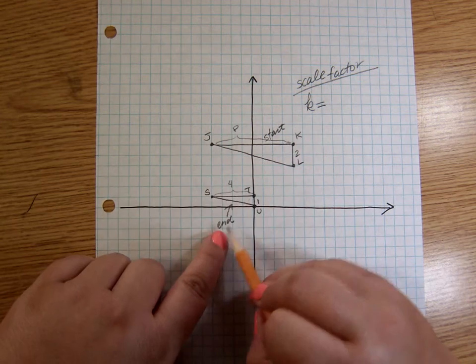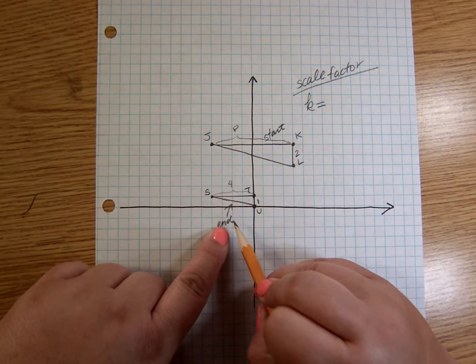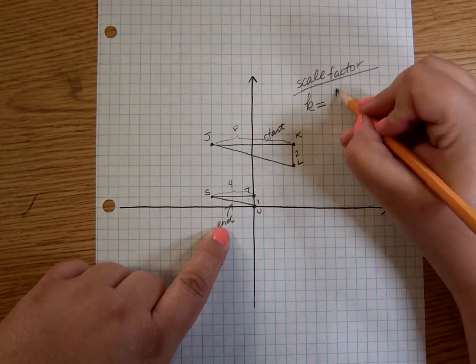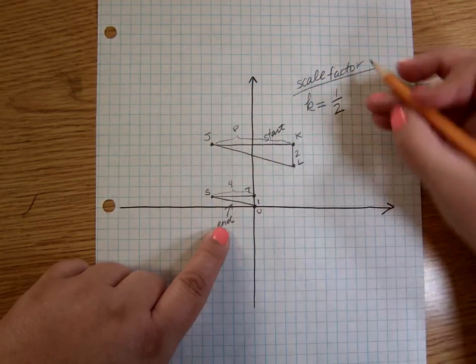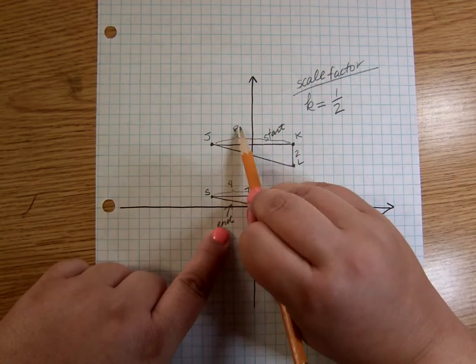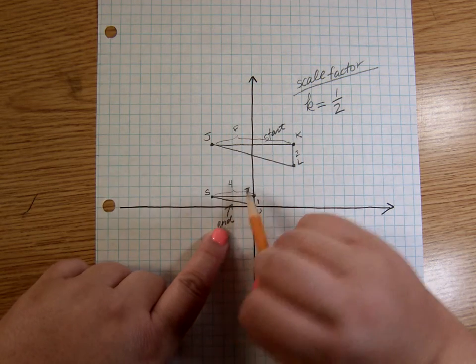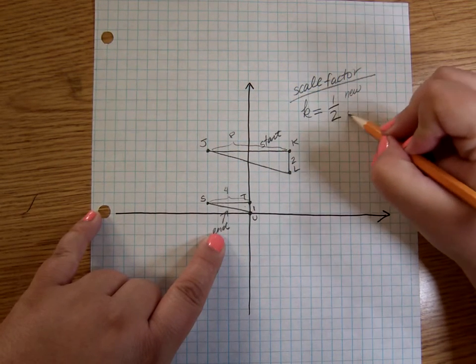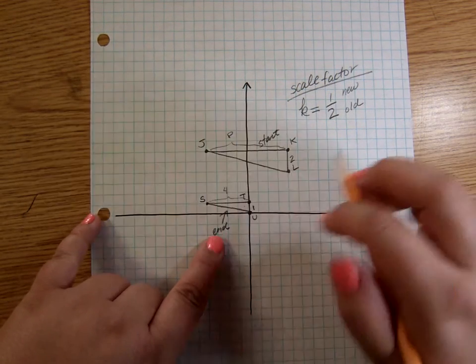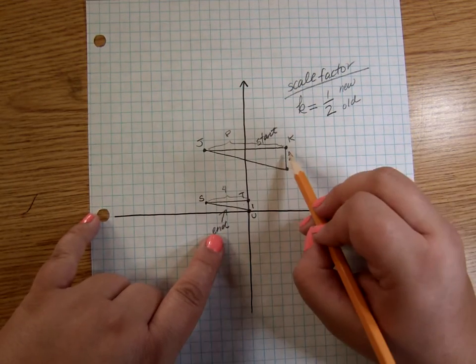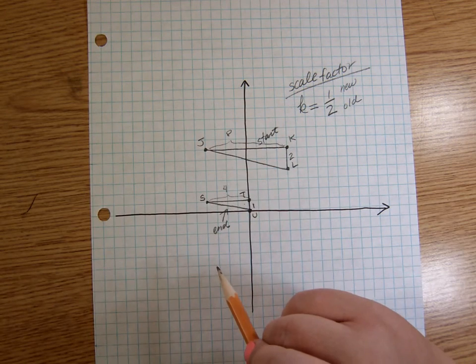So if we started here and we ended here, this is my final one. This is the new one. So new over old. I could put the one over the two. Or I could do the four over the eight. Because four over eight is also one over two. It's also one half. So that's new over old. Always remember to do new over old with dilations. So that's the first thing, is I know that first I have a dilation of one half happening.